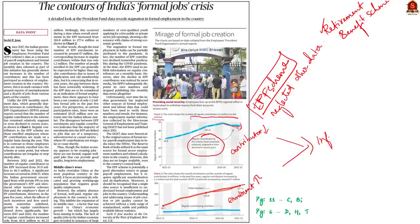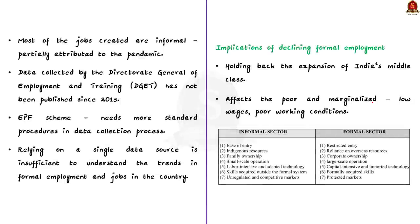From this, we can understand that the Indian economy appears to be creating jobs, but these are not formal or regular jobs — most jobs created in recent years are only informal. According to the article's author, this stagnation in formal employment is partially attributable to the pandemic and also to the government's neglect of other labour data sources. For example, the employment data collected by the Directorate General of Employment and Training (DGET) has not been published since 2013. Relying on a single data source is insufficient to understand trends in formal employment.